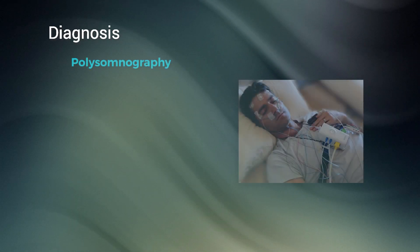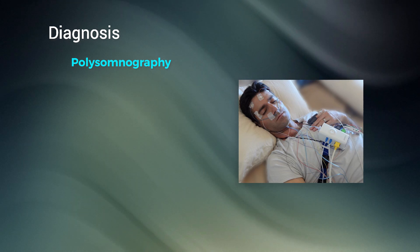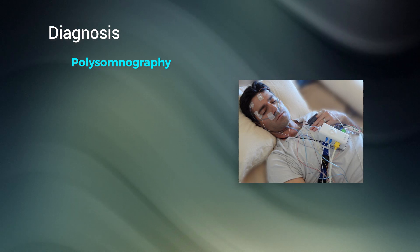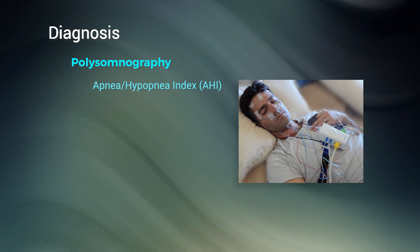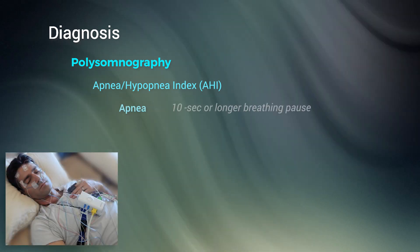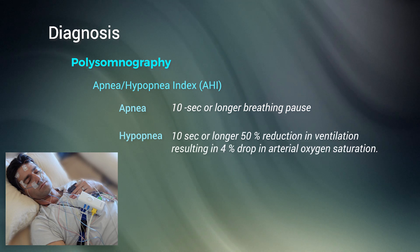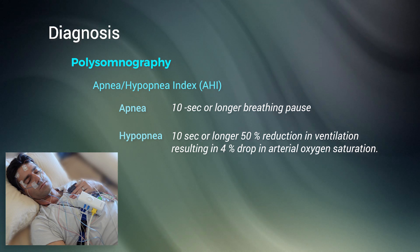Diagnosis of sleep apnea is confirmed by formal polysomnography. The severity of this syndrome is determined by the number of apneas or hypopneas per hour of sleep — this is called the apnea-hypopnea index. Apnea is defined as a 10-second or longer breathing pause, and hypopnea is a 10-second or longer 50% reduction in ventilation that results in a 4% drop in arterial oxygen saturation.